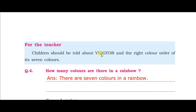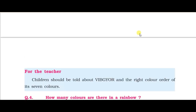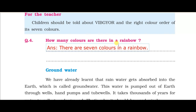The colors of the rainbow are violet, indigo, blue, green, yellow, orange, and red. Here is your fourth question: how many colors are there in a rainbow? There are seven colors in a rainbow. You can learn them as violet, indigo, green, yellow, orange, orange, and red.